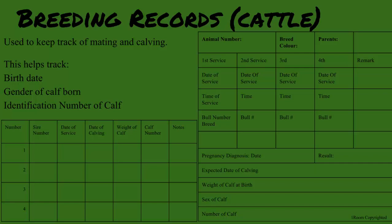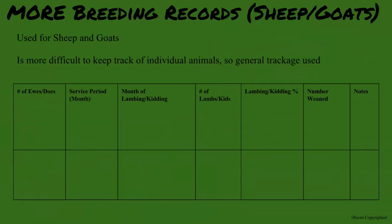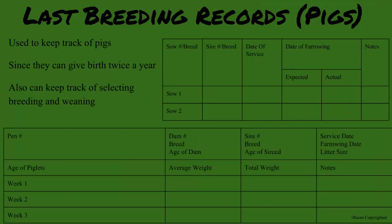Since these animals usually have a specific month of birthing, I use different and more general records for them. What about the pigs? Since pigs can give birth twice in a year, I keep track of that and also how the development of the piglets is going, such as weaning.